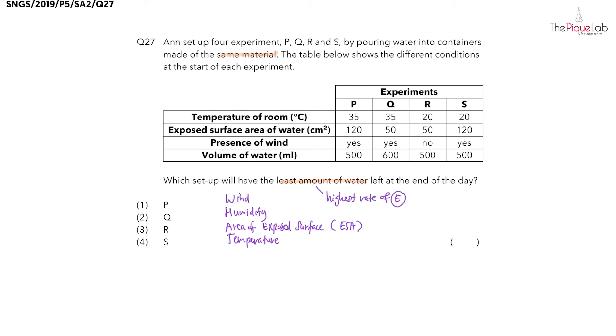If we have two different temperatures of the room, 35 and 20, which temperature will ensure a higher rate of evaporation? Yes, the higher the temperature, the faster the rate of evaporation of water. So we have setups P and Q.